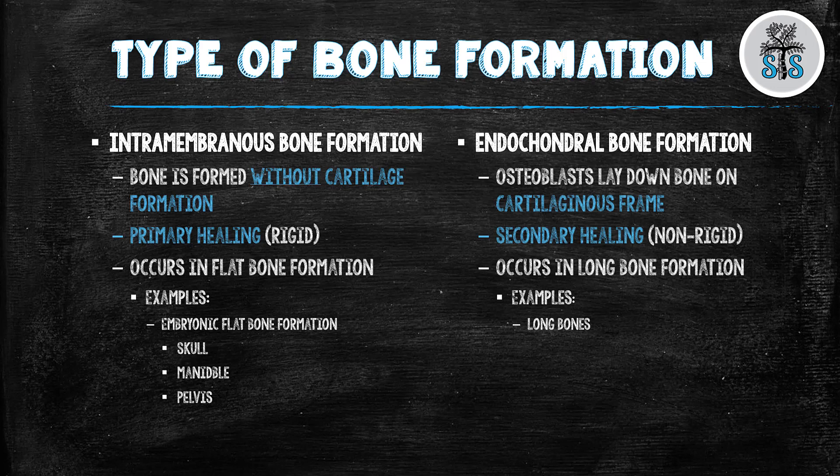The other type of bone formation is endochondral bone formation. This uses a cartilage framework created by chondrocytes, and the osteoblasts lay down bone on this framework, so bone is replacing the cartilage. This type of bone formation is also found in secondary healing, and it's what occurs in long bone formation. So it's very important to differentiate between intramembranous and endochondral bone formation.